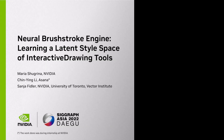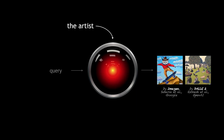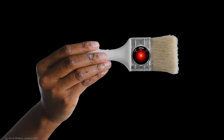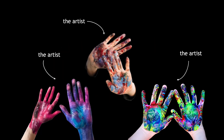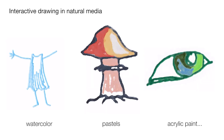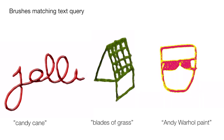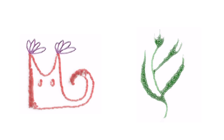We introduce Neural Brushstroke Engine by Masha Shugrina, Qingying Li, and Sanya Fidler. While many AI models are starting to paint on their own, we take the opposite approach and leverage AI to develop interactive brushes for human artists. Let's get our hands dirty with some digital paint. Neural Brushstroke Engine can mimic a variety of natural drawing media, retrieve a brush by a text query, or match style to a target artwork — all to allow unhindered interactive digital drawing by you.